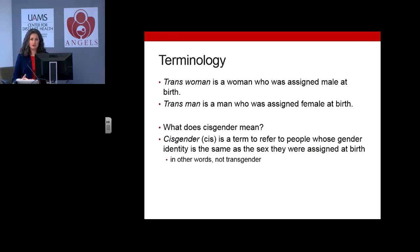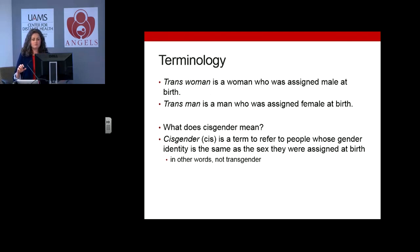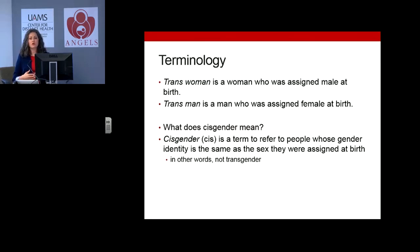Trans is used as the adjective to describe the person — trans woman, trans man. Cisgender refers to anyone whose gender identity is the same as the sex they were assigned at birth — in other words, not transgender. Because people who identify as non-binary or gender queer also have gender identities not congruent with assigned sex at birth, these folks are often included with trans identities.